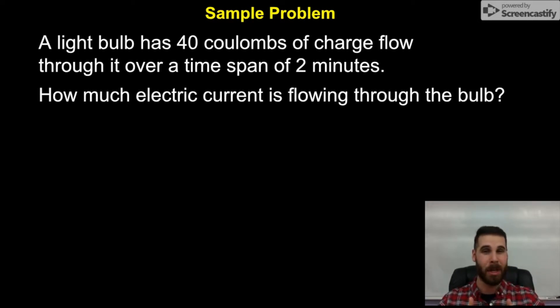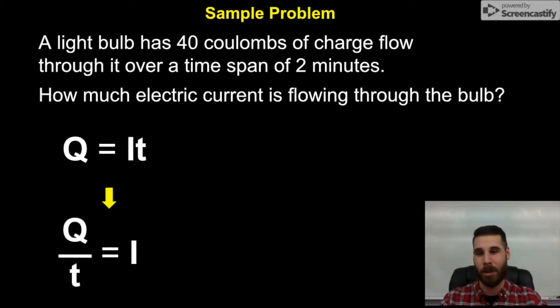And the unknown that they ask us about is how much electric current is flowing through the bulb. So current is I, that's the thing we're going to be solving for. Time is T, and we're given that. And coulombs of charge is Q. So we know two things, and we're looking for a third. So that's typically where we say, okay, what equation do we need? And that's going to be the one that we just talked about today, Q equals I times T. Now, it's not really set up correctly to solve for I at this moment. It's set up for Q. So we have to rearrange this equation by dividing both sides by T, and then canceling out the T's on the right would give us this version of the equation. Q over T equals I.